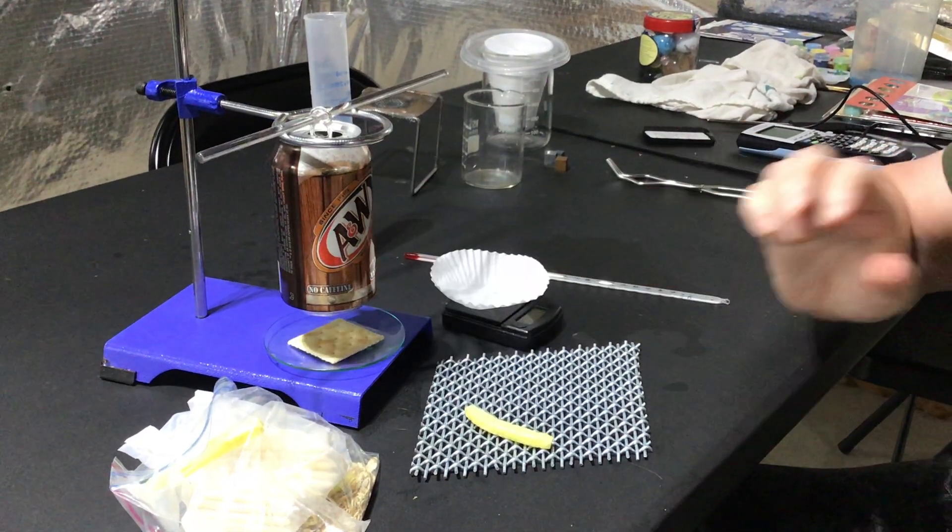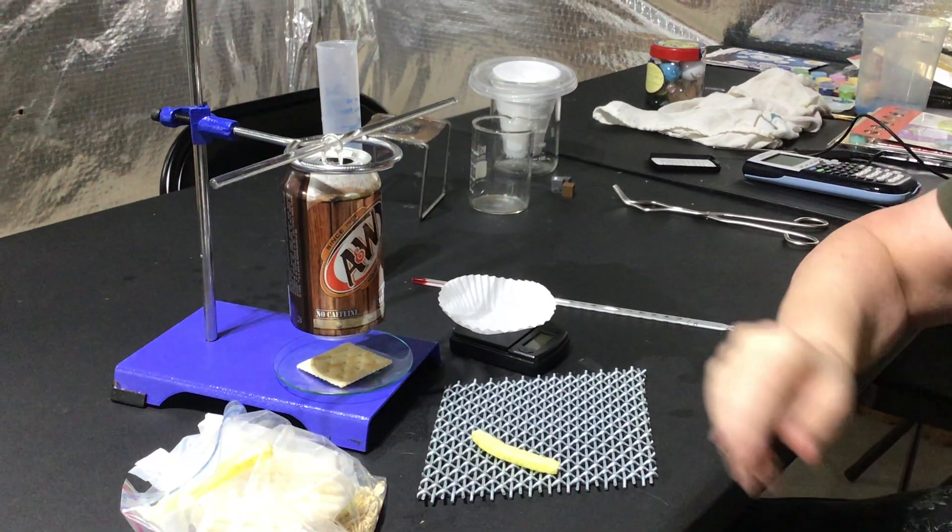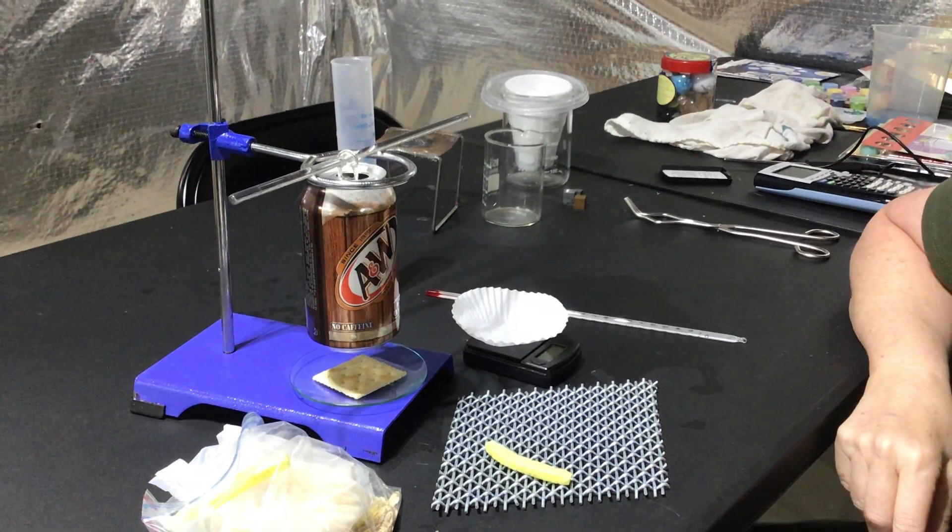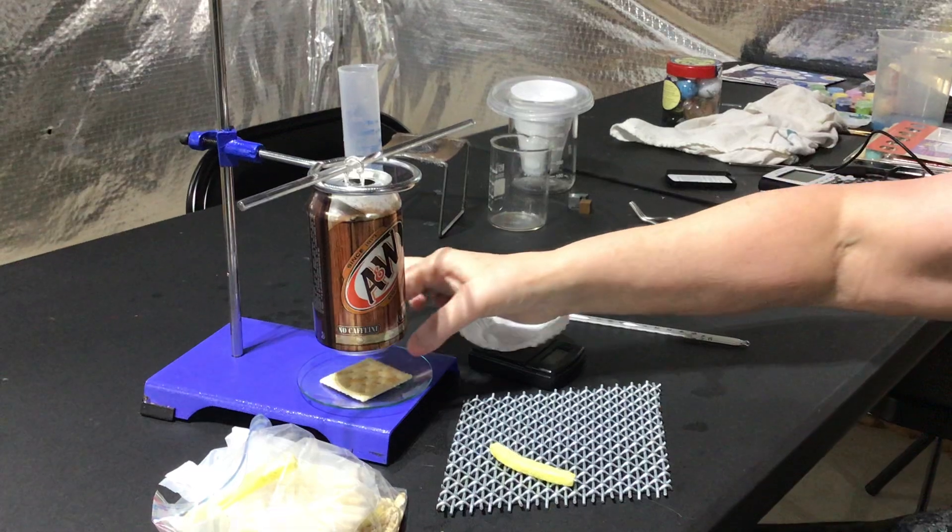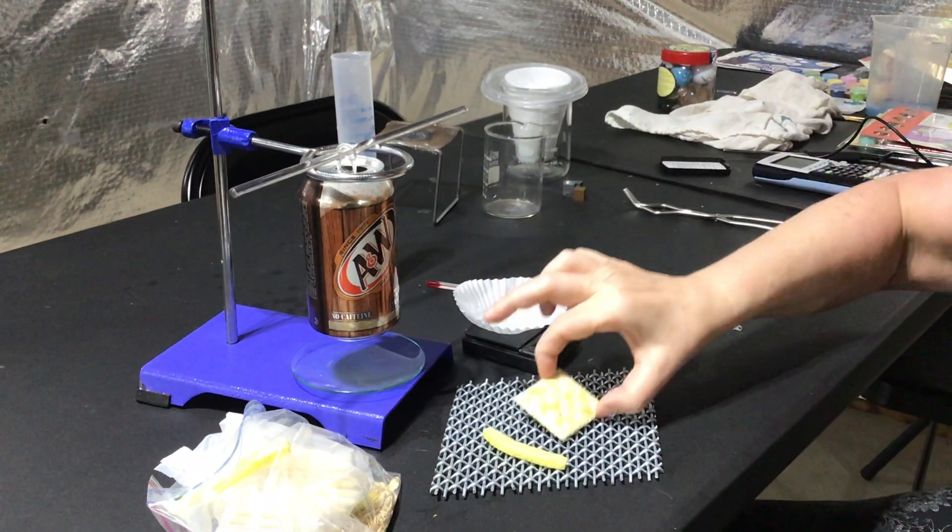You're going to put it on here or some part on your glass and you're going to light it. Some foods light more easily than others. For instance, peanuts.